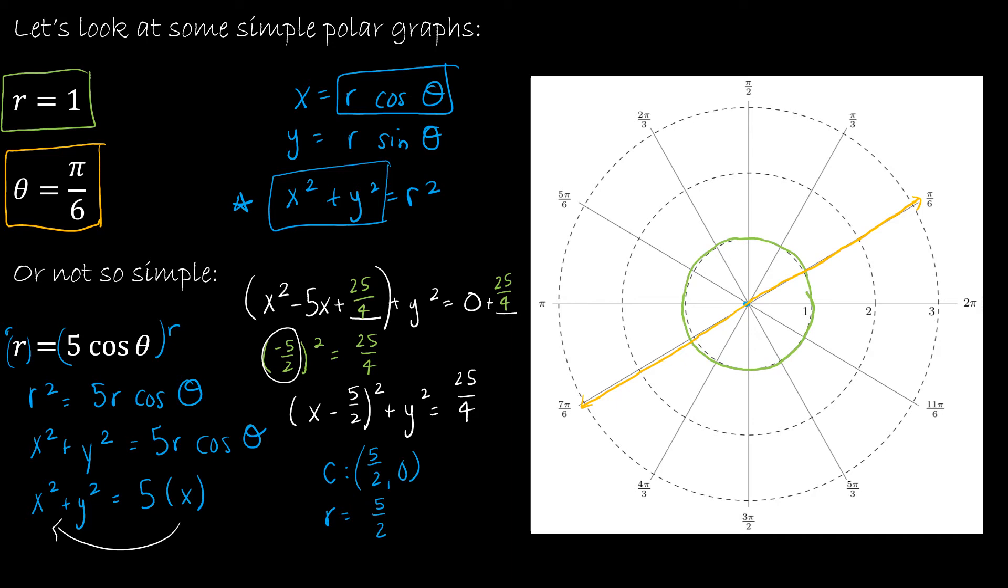So to graph that, I would go to 5 halves. And then I would go 5 halves in each direction, which obviously is not super easy to do because I've gone off of the graph here. But again, it's going to look something like that. And it would actually be a full circle, I just don't have enough room to finish that circle.